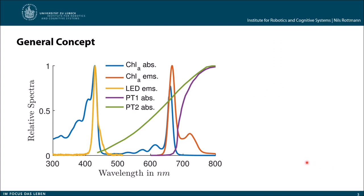Let's go over the general concept of our sensor approach. What we are using is the chlorophyll absorption and the chlorophyll emission spectra. The chlorophyll absorption spectra is given here in blue and has two peaks, one around 430 nanometers and one around 670 nanometers.